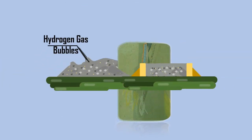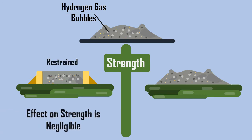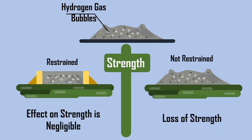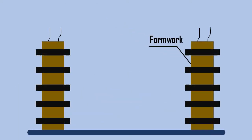The expansion also has some effect on strength, which depends on the restrained condition. If the concrete is restrained properly, the effect on strength is negligible; if not restrained, there is considerable loss of strength. Thus, to get good results, it is important that formwork is tight and completely confined.